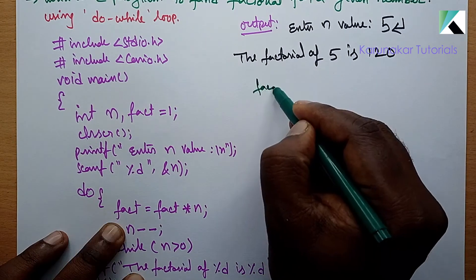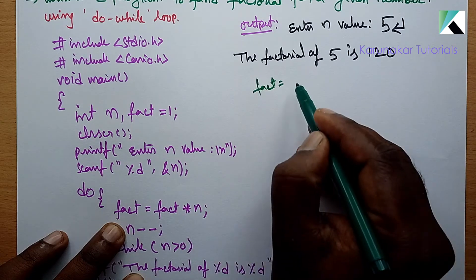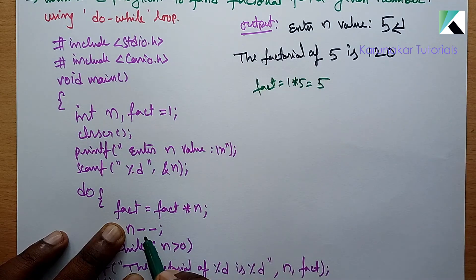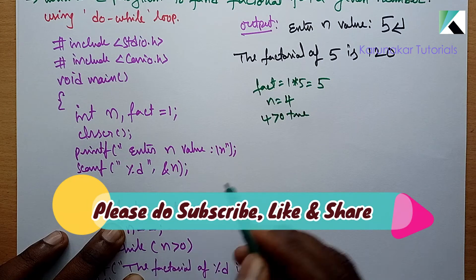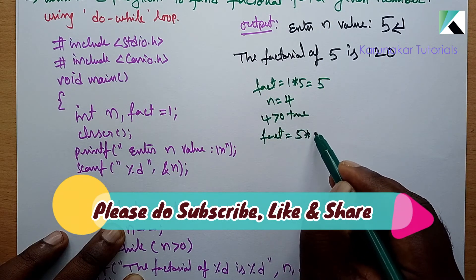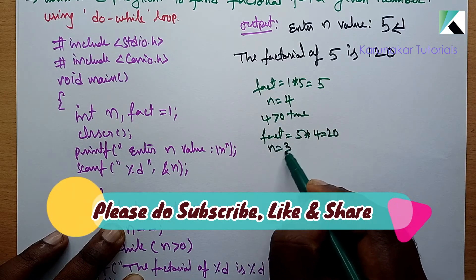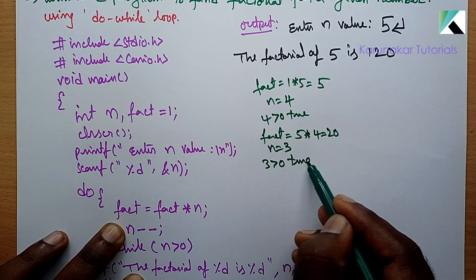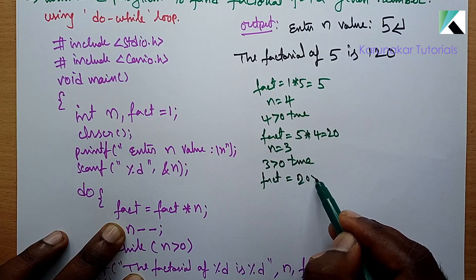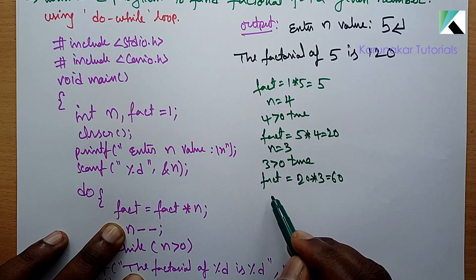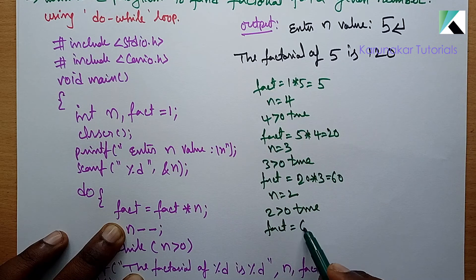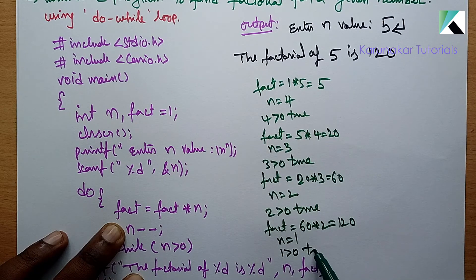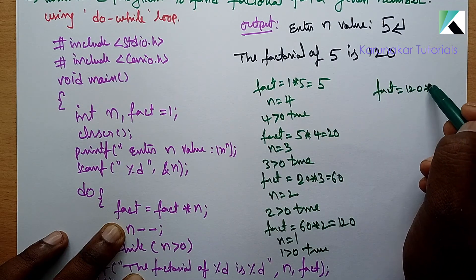Okay, let's trace the iterations. Fact is equal to fact into n. Fact starts with 1; 1 into 5 is equal to 5. Next, n minus minus. Now n equals 4, n greater than 0 is true, so loop repeats. Fact is equal to 5 into 4 is equal to 20. Now n equal to 3, n minus minus. 3 greater than 0 — yes, true, loop continues. Fact is equal to 20 into 3 is 60. n equals 2, 2 greater than 0 — true, loop continues. Fact is equal to 60 into 2 is 120. n equals 1, 1 greater than 0 — true, loop continues. Fact is equal to 120 into 1 is equal to 120.